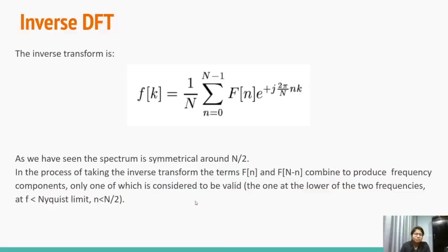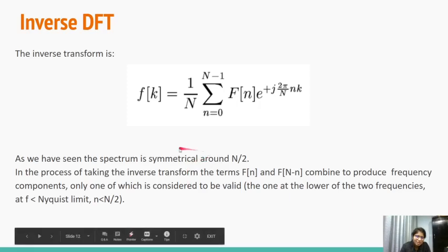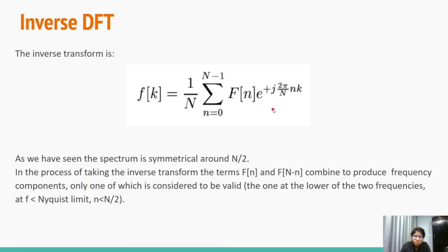Let's take a look at the inverse DFT. The inverse DFT transformation is given by this formula. We have already seen that the spectrum is symmetrical around capital N by 2. In the process of taking the inverse transform, the terms of the DFT given by small n and capital N minus n, which are F[n] and F[N-n], combined to produce frequency components, only one of which is considered to be valid.